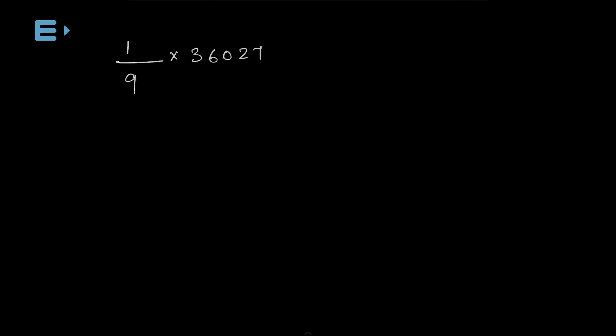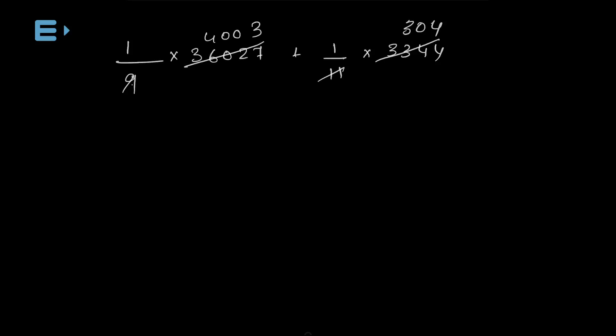We will look at the difference using 11 and 1 by 9. What substitute do we use? 11 is 11 and 1 by 9. Now we cancel — it gives us 4003, then 304, and if we cancel here it will be 4307. The answer is the third option: 4307.